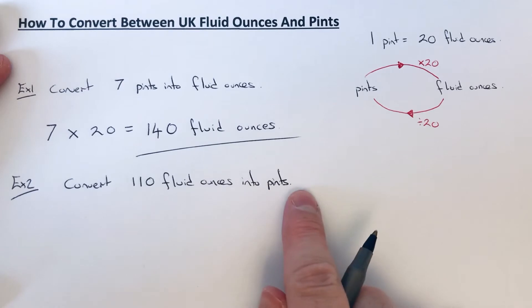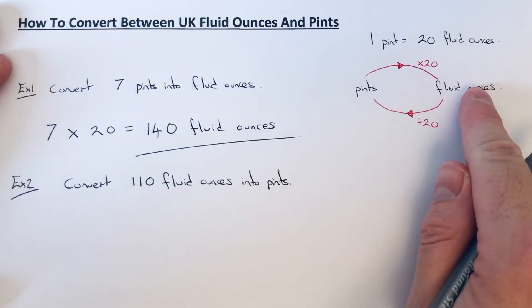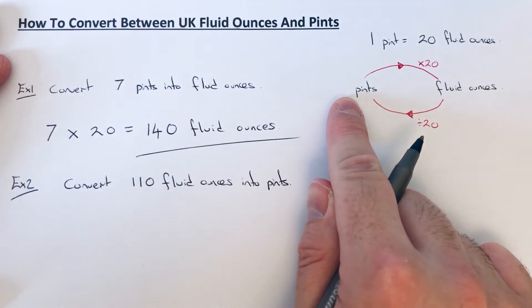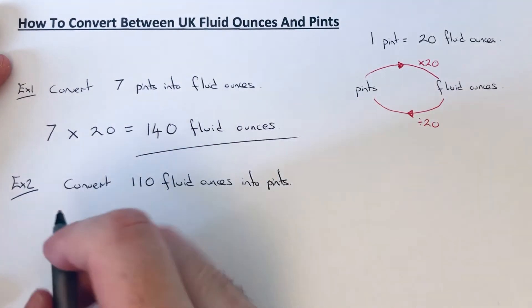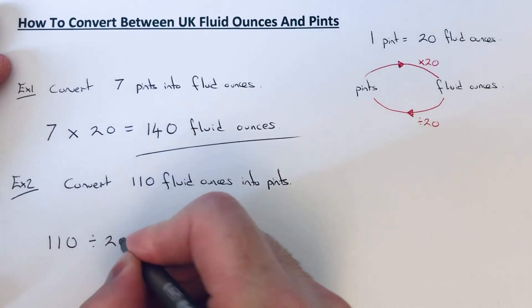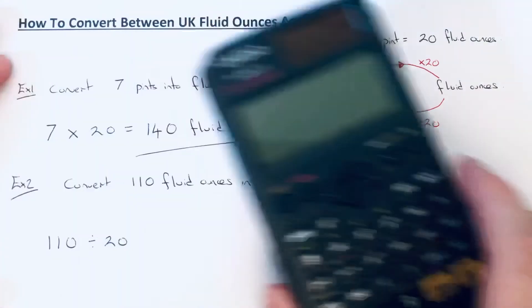ounces into pints. So fluid ounces to pints, this time you divide the number by 20. Make sure you put the number first, so we're going to divide that by 20. If you can't do that in your